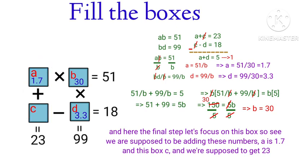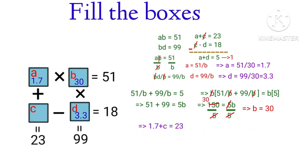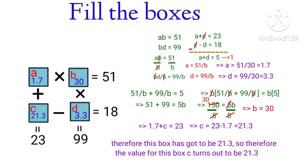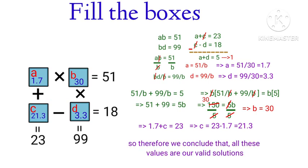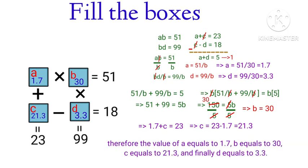For the final step, we focus on box C. Since A plus C equals 23 and A is 1.7, the value of box C turns out to be 21.3. Let's verify the horizontal subtraction: 21.3 minus 3.3 does indeed give us 18. So all values are valid solutions: A equals 1.7, B equals 30, C equals 21.3, and D equals 3.3.